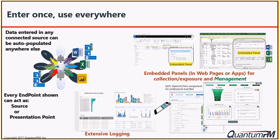Another advantage of BIA is enter once, use everywhere. There are lots of different sources where data can come from — Word documents, Excel spreadsheets, Power BI reports. We put embedded panel technology within Project Online for specific data entries. We've also built front ends using SAP's OpenUI5 Fiori components to drive a more user-friendly interface as an inbound into Project Online. This drives a single source of truth and allows data integrity and referential integrity across the ecosystem.